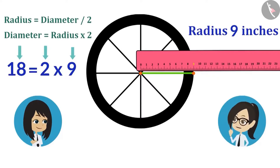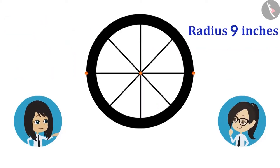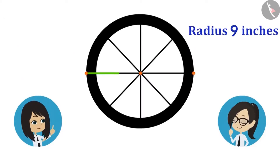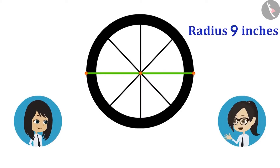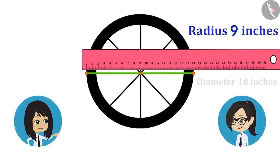Why not measure the diameter of this wheel so that we know that our calculation is correct? To measure the diameter, we have to draw a straight line joining both sides in such a way that the line goes through the center. Now let's measure this too. See, the diameter is also 18 inches on the scale.